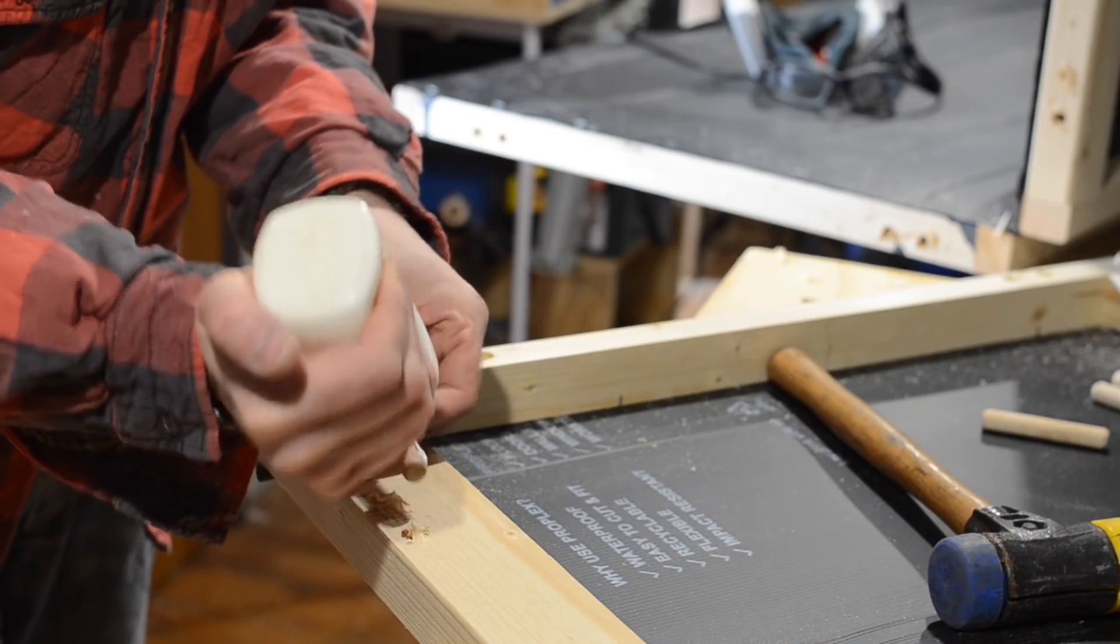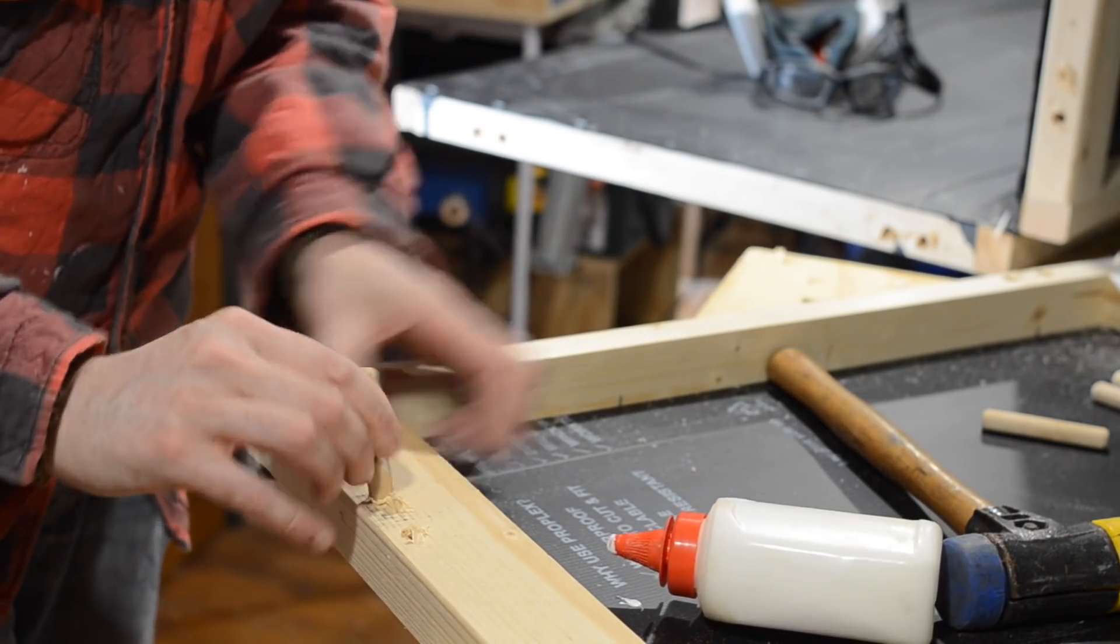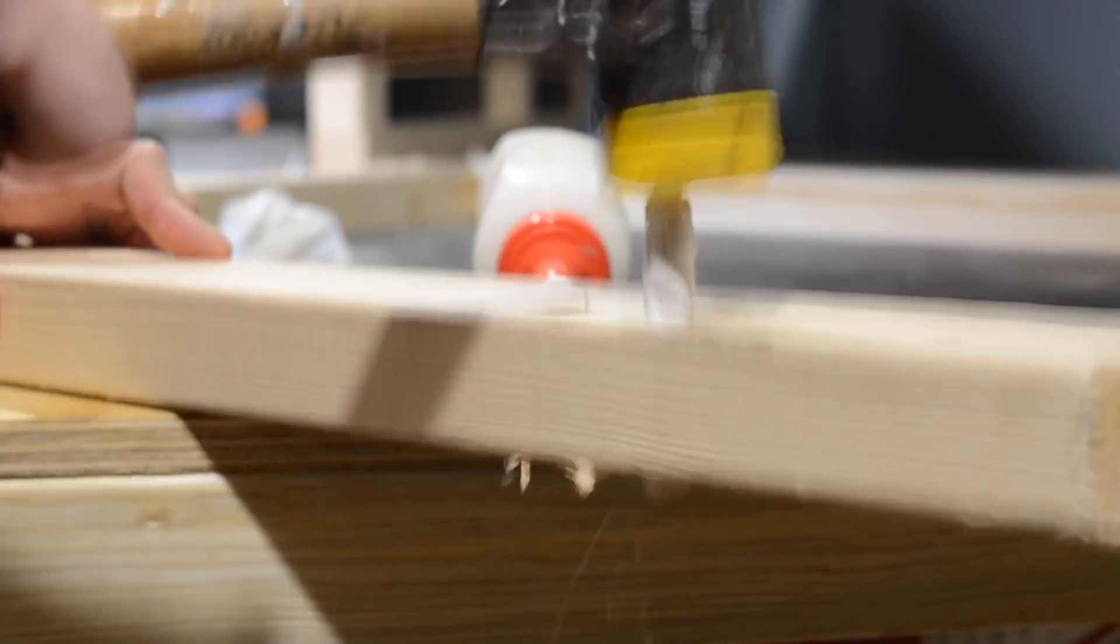With that done on both ends I take the end panels off and I glue in some dowels. These are some oak dowels and they're going to go all the way through the side pieces and then stick out the other side.